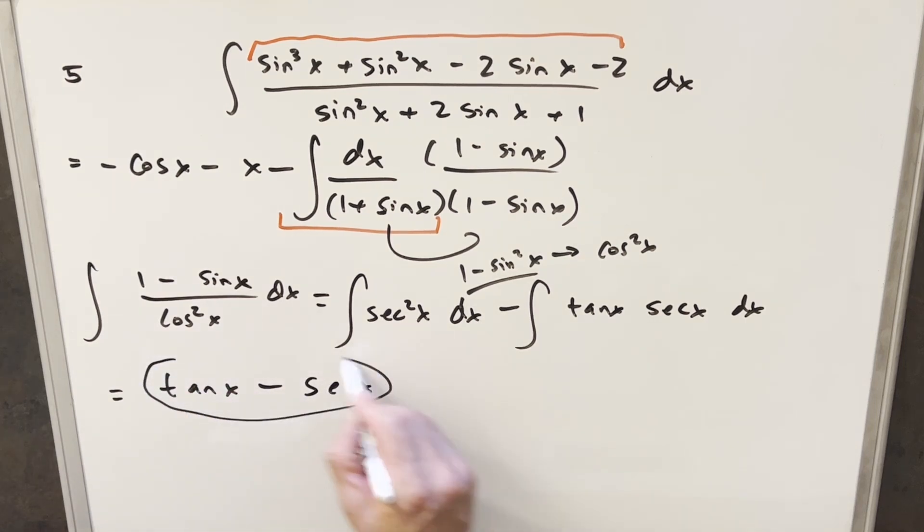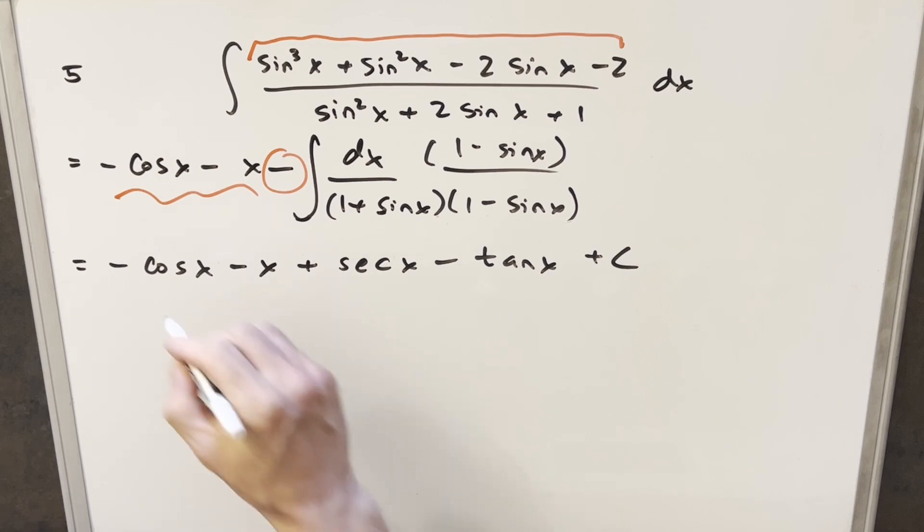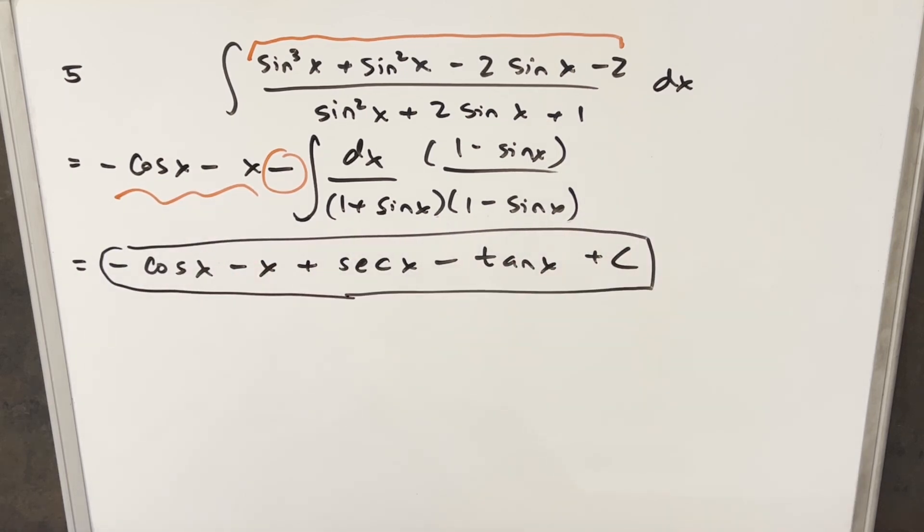And now from here, I can take this and we can just plug this back in. I don't want to forget that we have this other stuff here. And I don't want to forget this minus sign. Okay, now at this point, the first time I did it, I just circled it and called it good. But then I noticed this doesn't match the solution MIT has. And then where I see the problem is really here with the secant x and tan x.